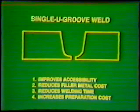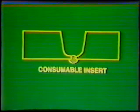Joints like these are normally used in conjunction with a consumable insert. This is a filler metal which is tacked at the root of the joint and is completely fused into the root during welding, thus becoming part of the final weld deposit. Consumable inserts are used to assure complete, uniform joint penetration and root reinforcement.